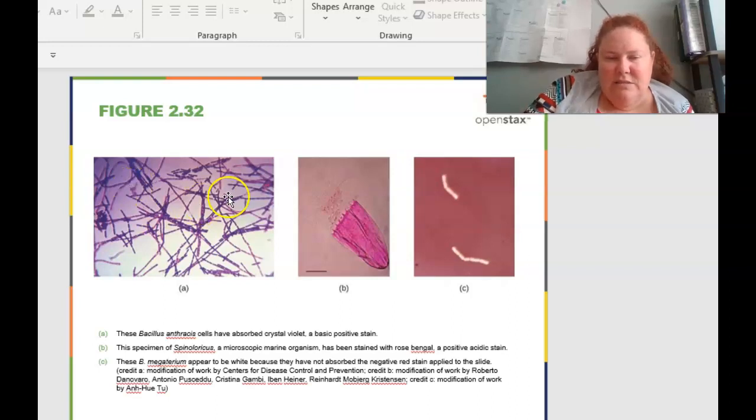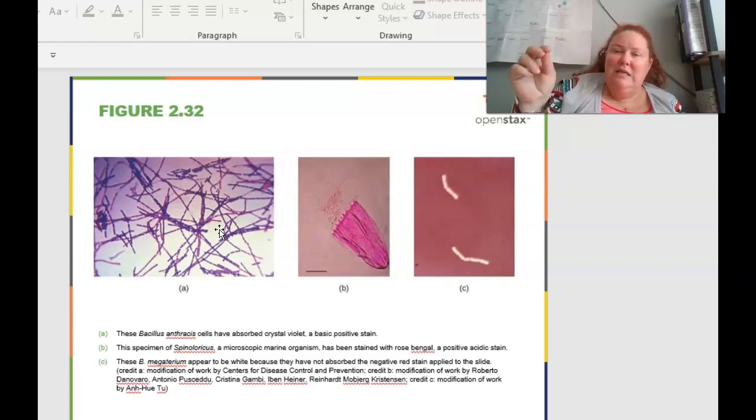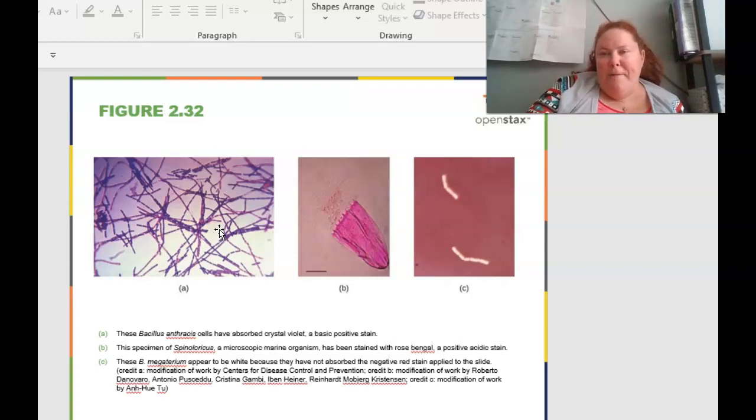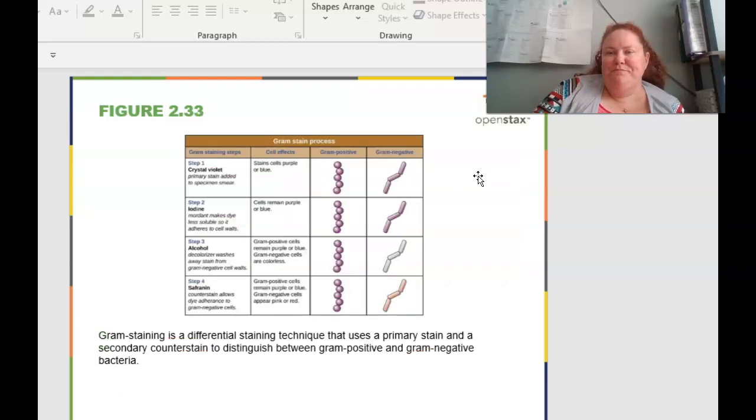So staining, you can stain different things to be able to look at different characteristics. This looks like anthrax cells have been absorbed by crystal violet. And this is a basic positive stain. And so we get to learn about all these different things and you will be doing crystal violet stains. And so this is why I say don't wear white in the lab and make sure to wear your lab coat. This one is stained with rose bengal and this is a positive acid stain. So this is a basic stain. This is an acid stain. And so I don't believe we use rose bengal unless I changed some things on me. But again, the whole point of this is that you're getting contrast and it can be specific for different types of cells.